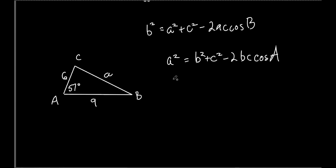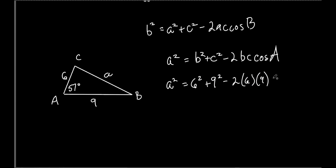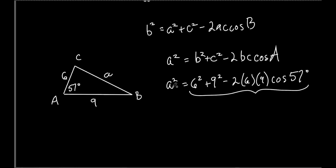So do I know A? No — so I keep it A squared. Do I know B? Yes, it's 6. So it's 6 squared plus 9 squared minus 2 times 6 times 9 times cosine of 57 degrees. That's equal to A squared, and then you take the square root of it. You could start with the square root right off the bat. Give yourself about a minute to put that in the calculator without me telling you anything else.